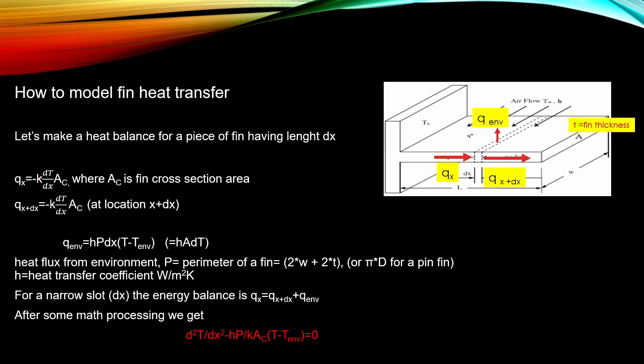And for that slot, we can write that the heat conduction coming to that small slot is the conductivity of the material times the temperature difference times the cross-sectional area. And the cross-sectional area is the fin width times the fin thickness.